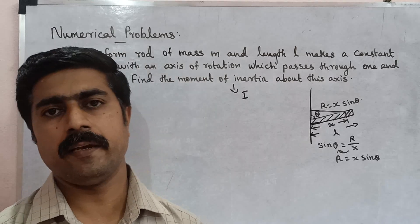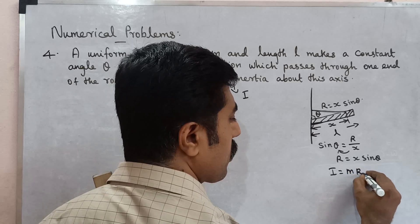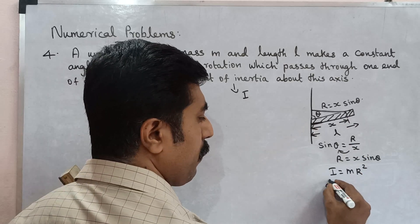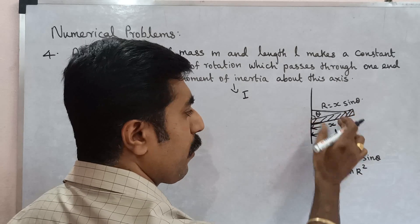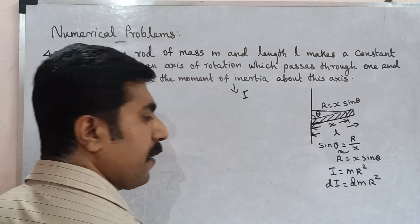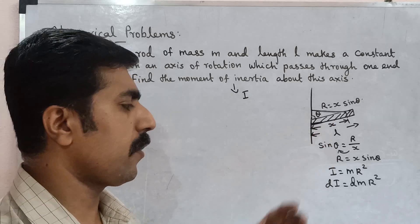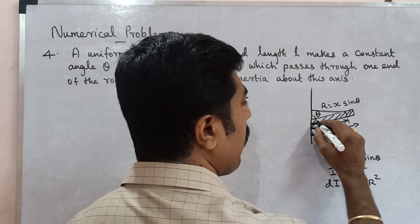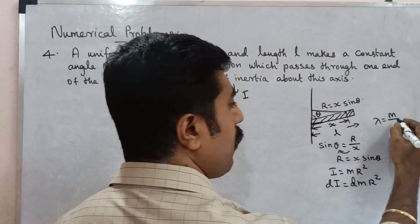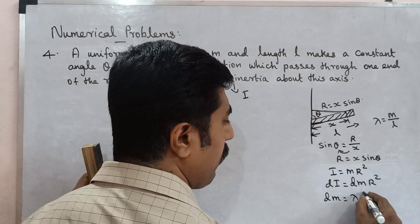Moment of inertia I, general expression I is equal to m r square. This is whole rod L length, but x length dI is equal to... Mass is equal to dm, R square. Density expression, linear mass density equal to mass per unit length. Dm is equal to lambda dx.